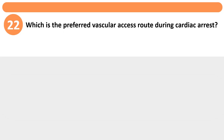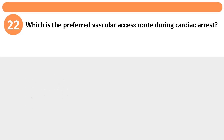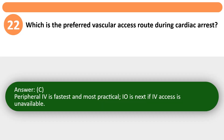Which is the preferred vascular access route during cardiac arrest? A. Central line. B. Intraosseous. C. Peripheral IV. D. Subcutaneous. Answer: C. Peripheral IV is fastest and most practical; IO is next if IV access is unavailable.